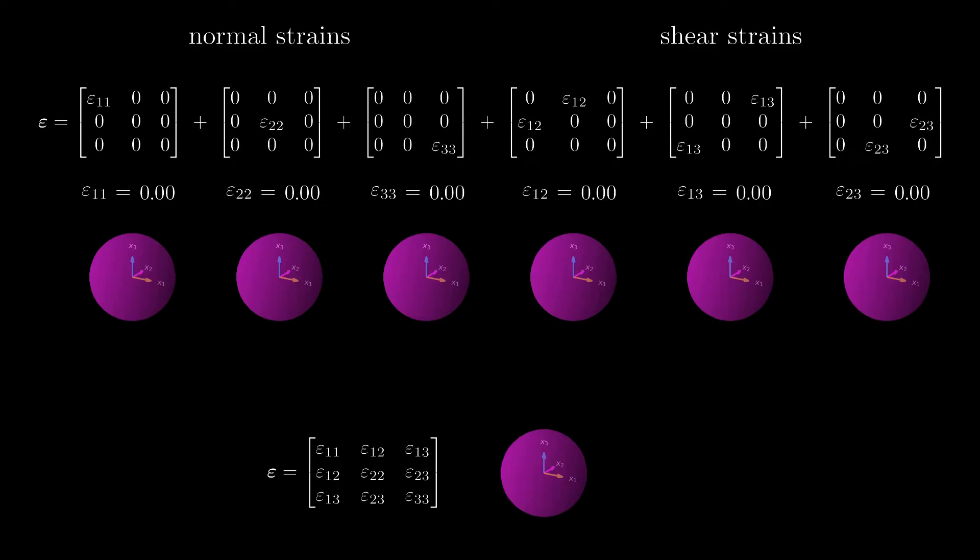Let's take an example where we set all components to zero except for epsilon 11 and epsilon 23. The infinitesimal element stretches in x1 direction and shears in the x2 and x3 plane.